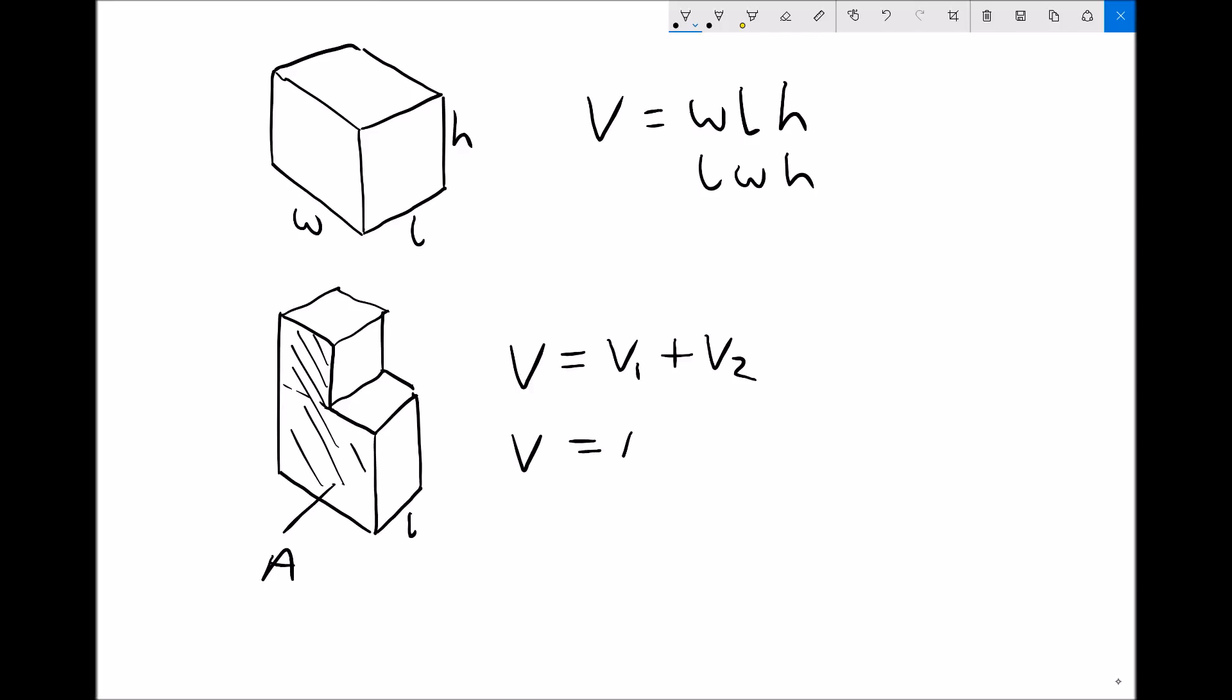So the volume of that shape is the frontal area or the cross-sectional area times the length. And that would also give us the volume. The area would be in metres squared times the length in metres would give us a volume in metres cubed.